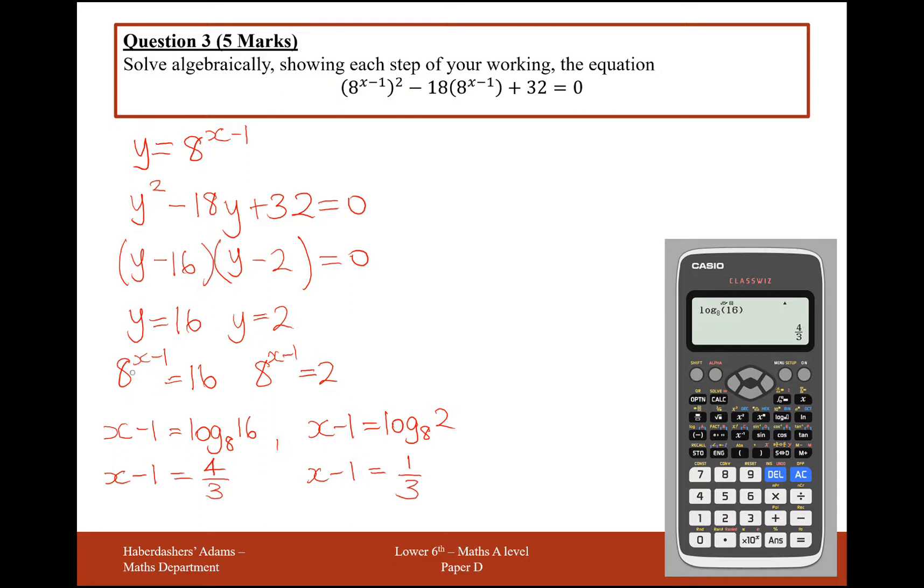And then if you cube root 8, you get 2, and 2 to the power of 4 will give you 16. So therefore, now we need to add 1 to both of these fractions. So 4/3 add 1, we get 7/3. And 1/3 add 1, we get 4/3.